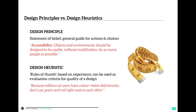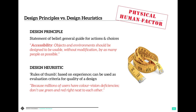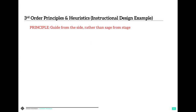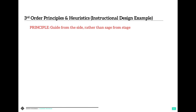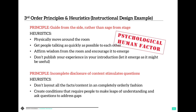Here's another example: millions of users have color vision deficiencies, so when presenting a PowerPoint, don't use red and green together. That's a physical human factor heuristic. There are also third-order heuristics we can work with.